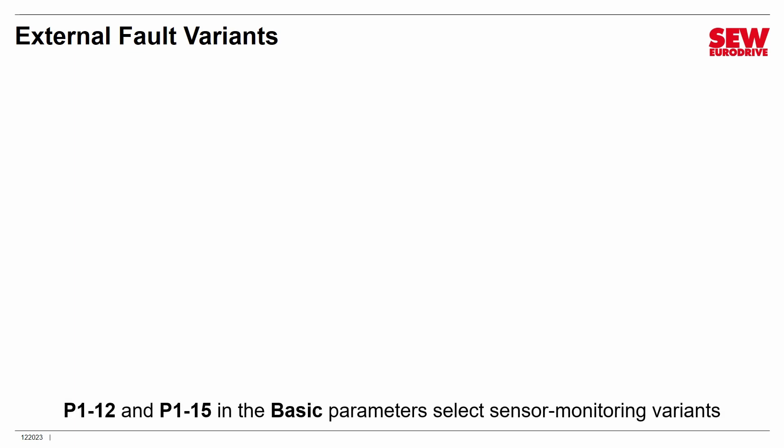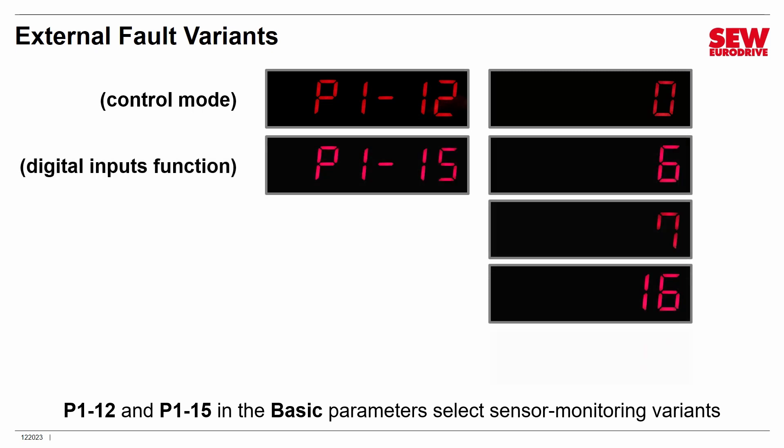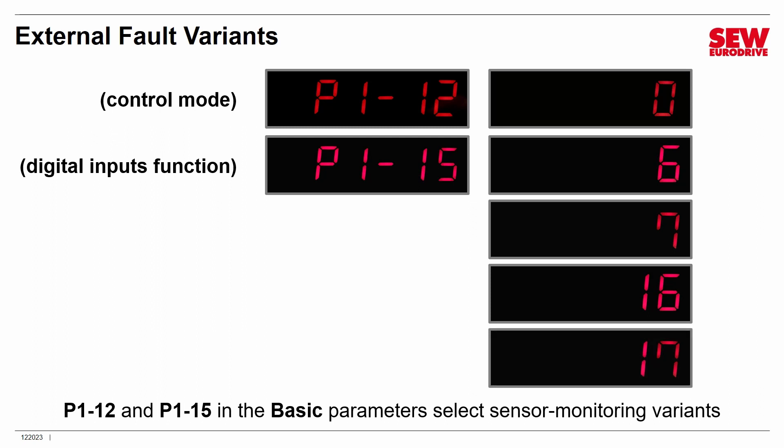Once your sensor is wired up, you need to switch to terminal control mode and pick a variant that monitors the sensor. Parameters 1-12 and 1-15 in the basic parameters are what you need. Set parameter 1-12 to 0 for terminal control mode, then set parameter 1-15 to one of the four possible variants: 6, 7, 16, or 17 — all of which can monitor external sensors.